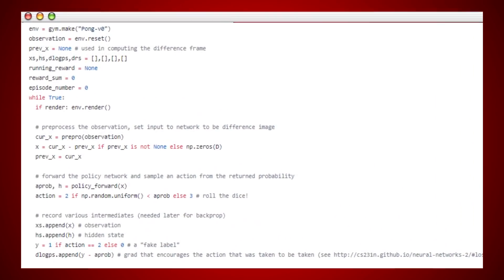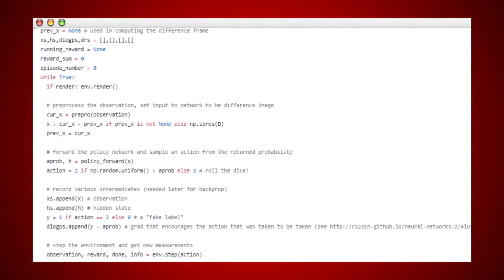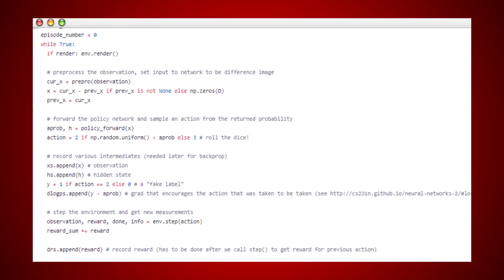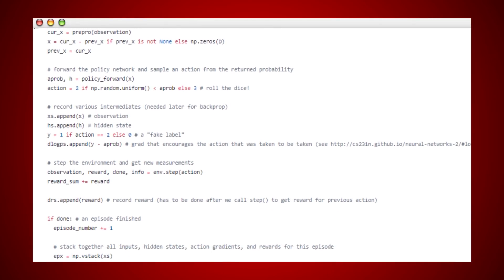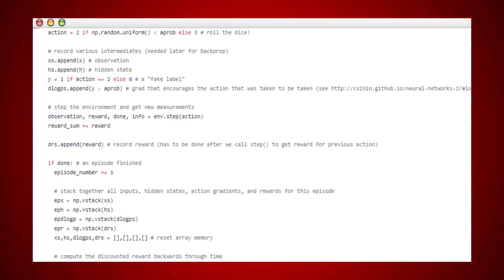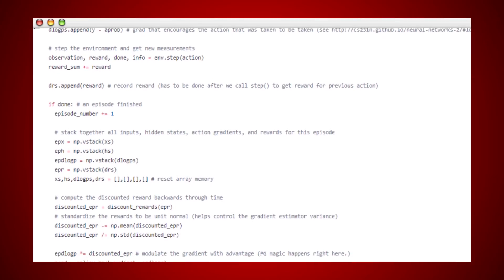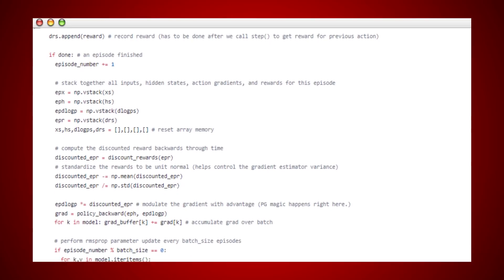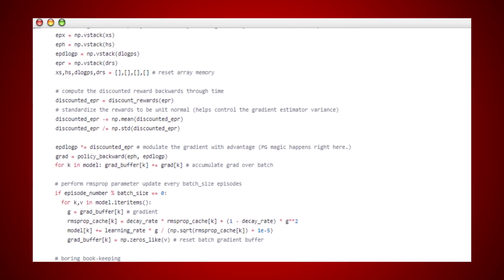For training, we can initialize the policy network with two sets of weights and play a hundred games of pong. Assume each game is made up of 200 frames and we've made 20,000 decisions for going up or down. And for each one we know the parameter gradient which tells us how we should change the parameter if we wanted to encourage that decision in that state in the future. The only missing step is to label every decision we've made as good or bad. If we won 12 games and lost 88, we can take 200 times 12 decisions we've made in the winning game and do a positive update. We'll take the other 200 times 88 decisions we've made in the losing game and do a negative update.